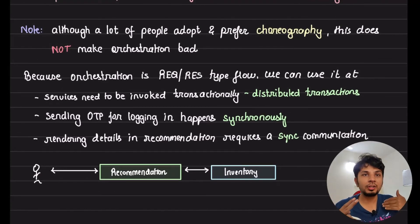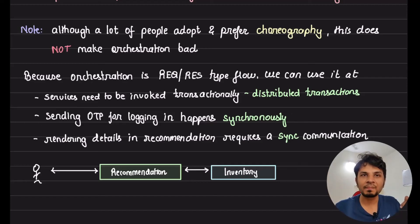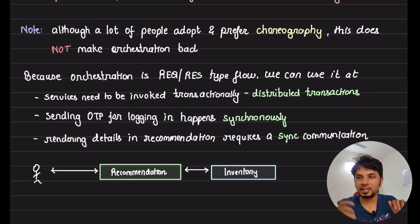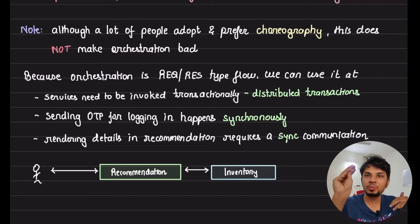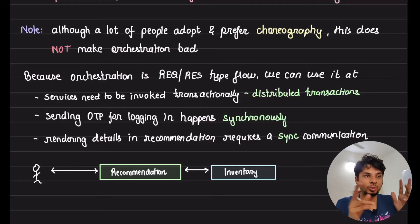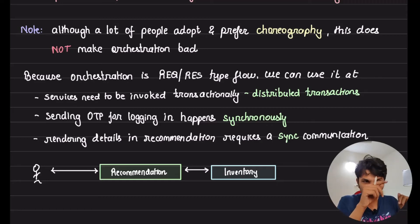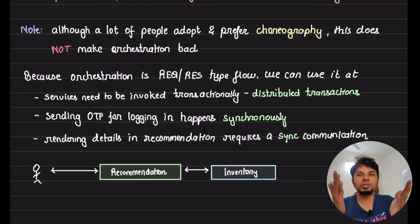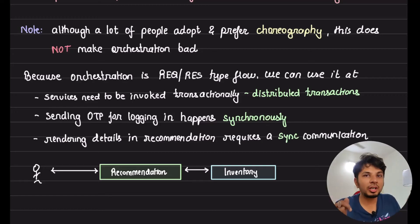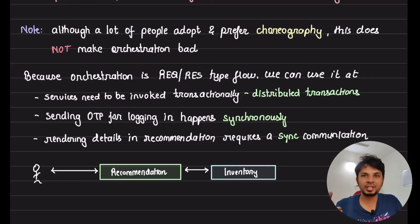Another example: sending an OTP for login. This cannot be done asynchronously — you can't just emit an event and wait for your notification service to send the OTP, because that adds delay for the user. If consumers are down, the user won't even receive the OTP. Plus, mobile carriers take time to deliver SMS. To ensure the SMS reaches the user quickly, the authentication service should synchronously invoke the API of the notification service to send the OTP directly — keeping login time to a bare minimum and allowing easy retries on failure.